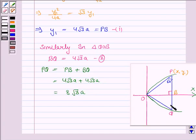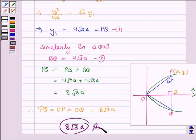Now, since this is an equilateral triangle, all the sides equal. So, PQ is equal to OP is equal to OQ is equal to 8 root 3 A. Hence, length of each side of triangle is 8 root 3 A. And this completes the question and the session. Bye for now. Take care. Have a good day.